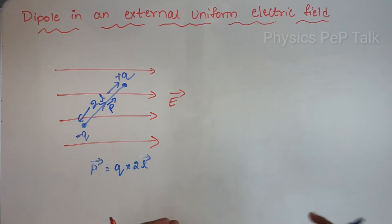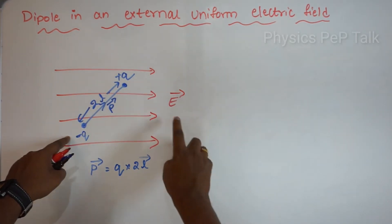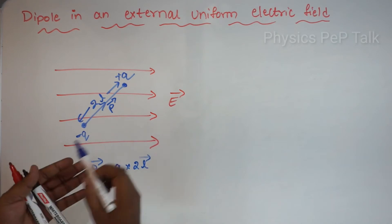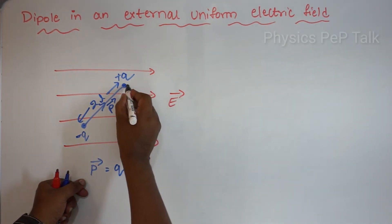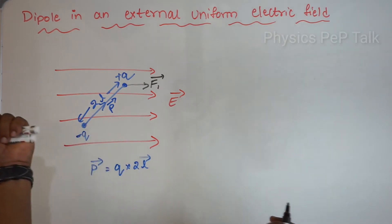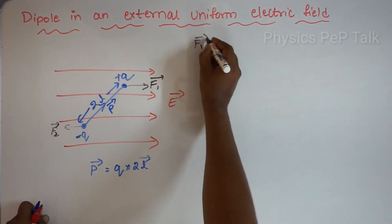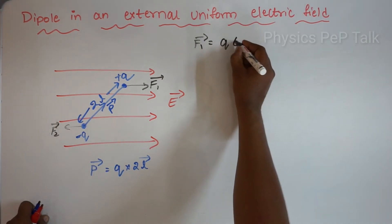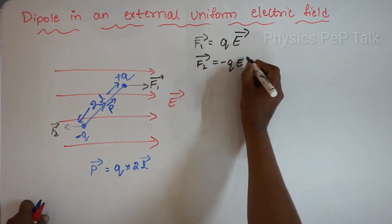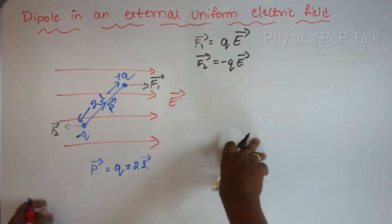When I place a dipole in an electric field, the positive charge will experience a force F1 in the direction of the electric field. The negative charge minus q will experience a force F2 in the opposite direction. So F1 equals qE and F2 equals minus qE.